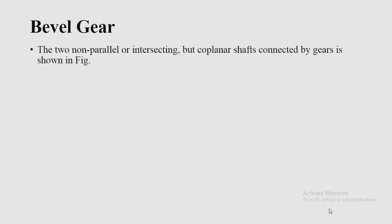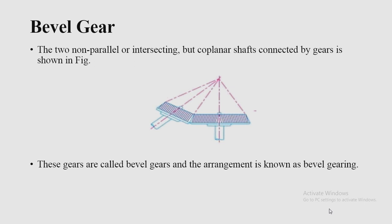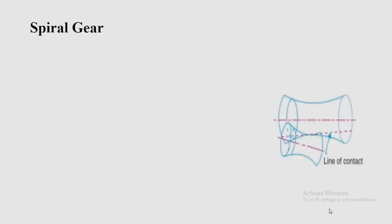Next, classification: bevel gears. Two non-parallel or intersecting but coplanar shafts connected by gears are shown in the figure — this is the bevel gear. These gears are called bevel gears and the arrangement is known as bevel gearing. Bevel gears, like spur gears, may also have their teeth inclined to the face of the bevel, in which case they are known as helical bevel gears.